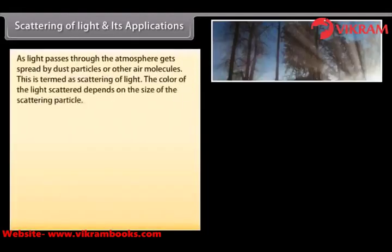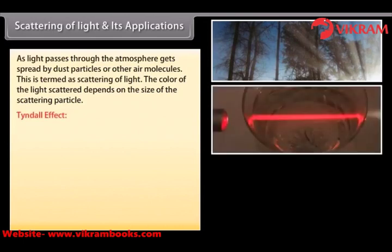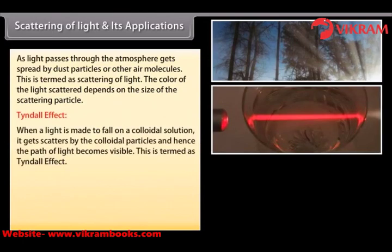As light passes through the atmosphere, it gets spread by dust particles or other air molecules. This is termed as scattering of light. The color of light scattered depends on the size of the scattering particle. When light is made to fall on a colloidal solution, it gets scattered by the colloidal particles and hence the path of light becomes visible. This is termed as the Tyndall effect.